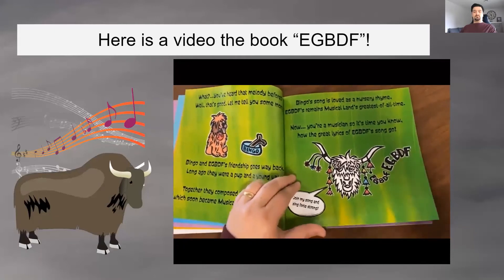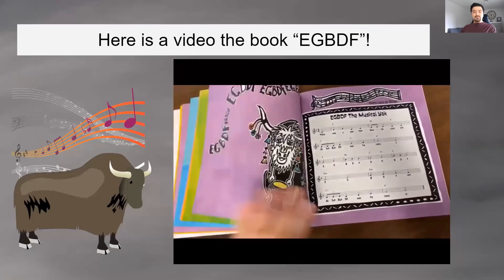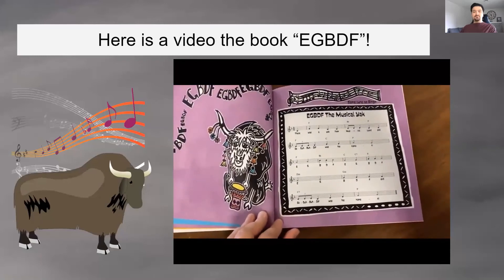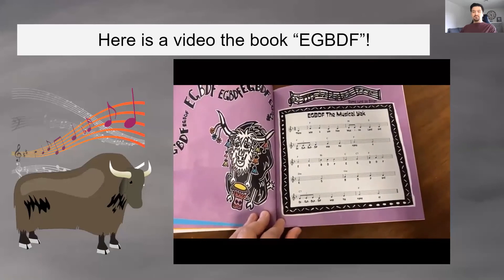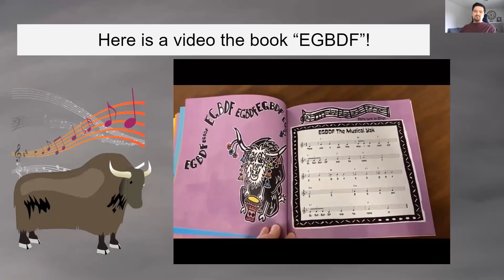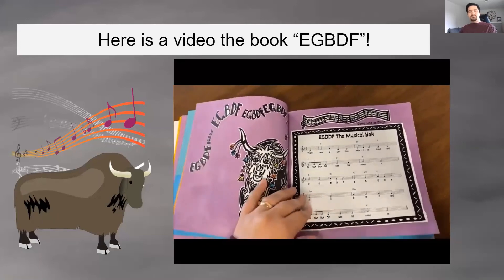There was a yak from Musical Land and EGBDF was his name. EGBDF's friendship goes way back. Long ago, they were a pup and a young yak. Together, they composed this snappy jingle, which soon became Musical Land's hottest single. Bingo's song is loved as a nursery rhyme. EGBDF remains Musical Land's greatest of all time. Now, you're a musician, so it's time you know how the great lyrics of EGBDF's song go. Join my song and sing forte strong. There was a yak from Musical Land and EGBDF was his name. Oh, EGBDF, EGBDF, EGBDF, and EGBDF was his name.